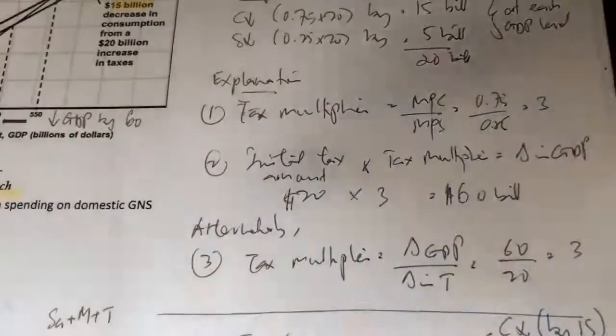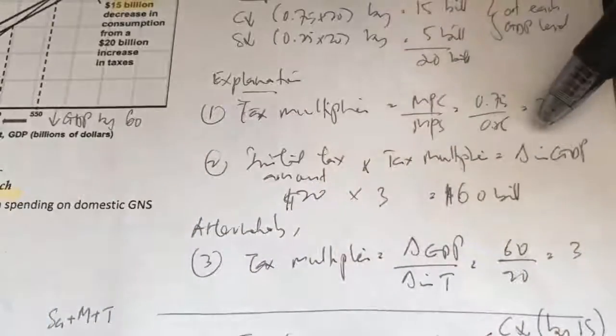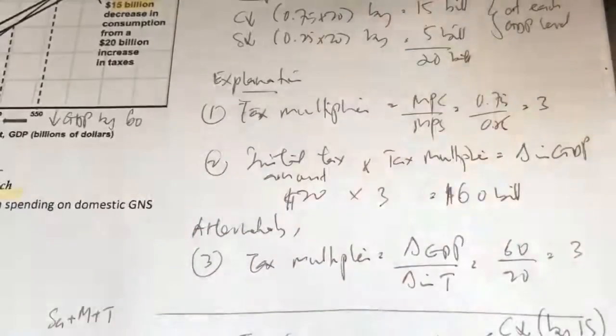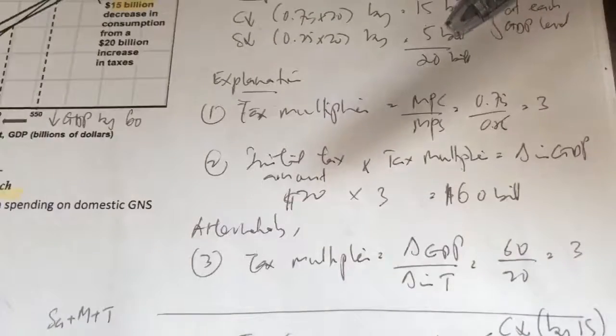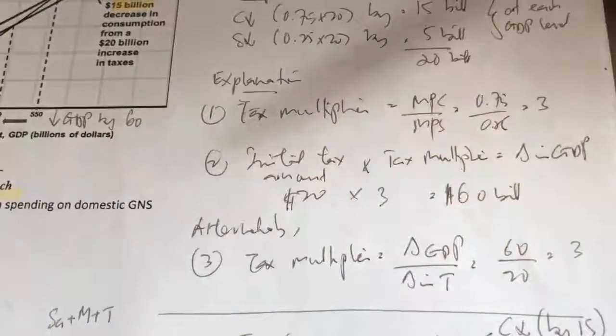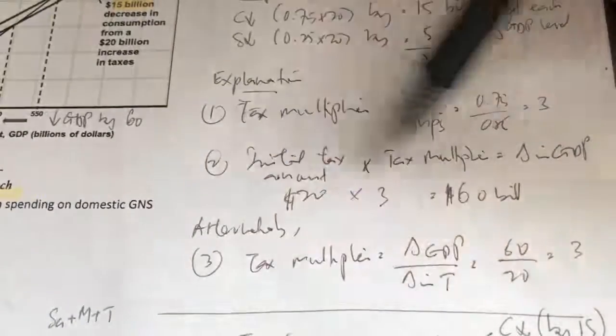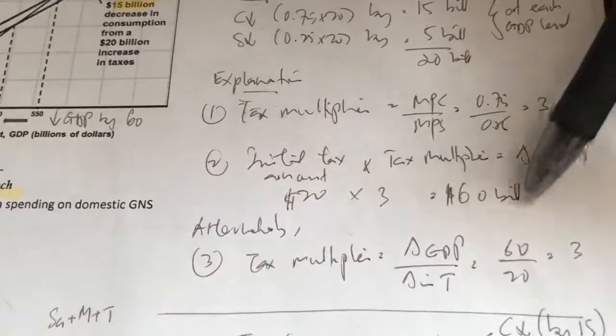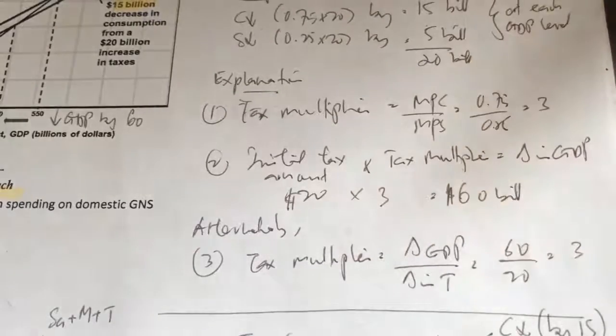Sometimes they'll give you the multiplier and ask you to find what is the change in GDP. So you just rearrange the formula and you'll be able to find how much is the change in GDP. Now let's take a look at what happens when there's taxation and what is the impact on real GDP using the leakage injection approach.